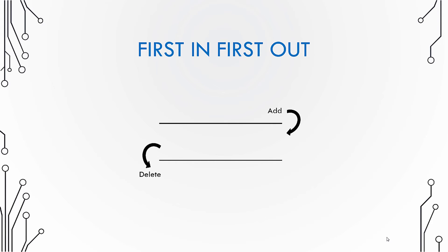A queue is a first in first out data structure. That means the object that you add to the queue first will be the first one to go out of the queue. Let us see this animation to understand this further.